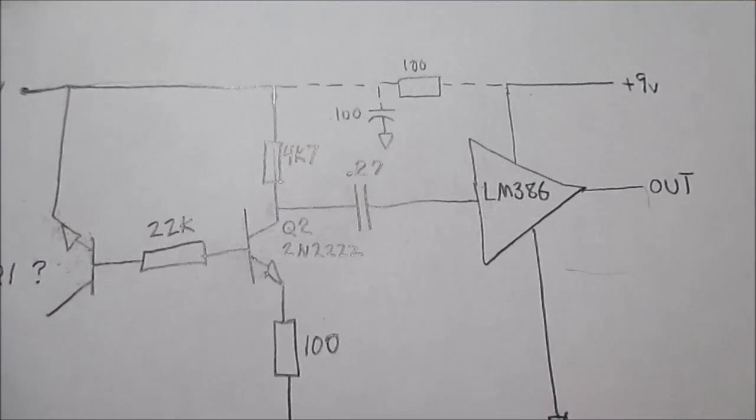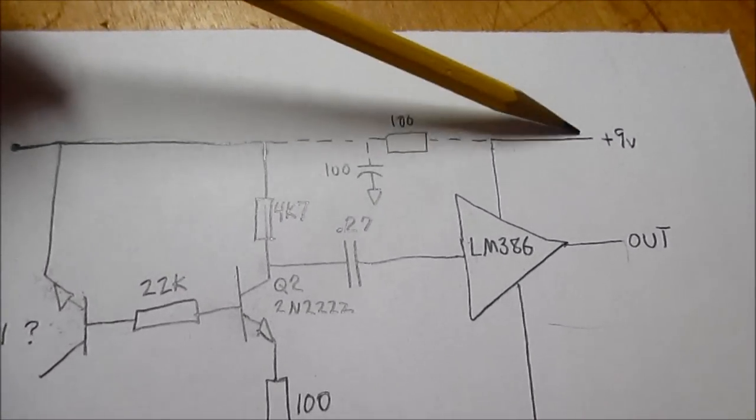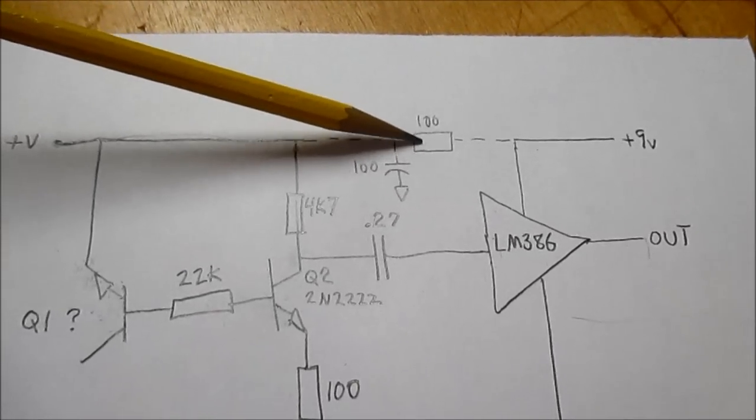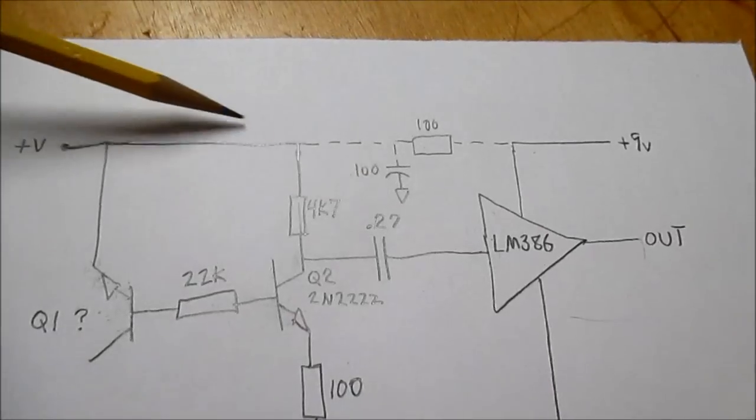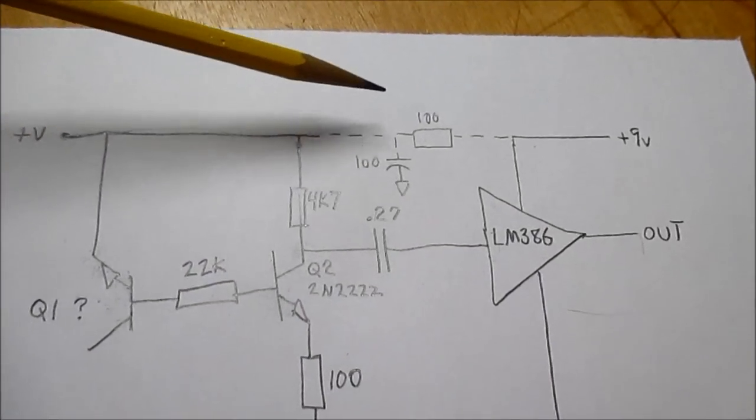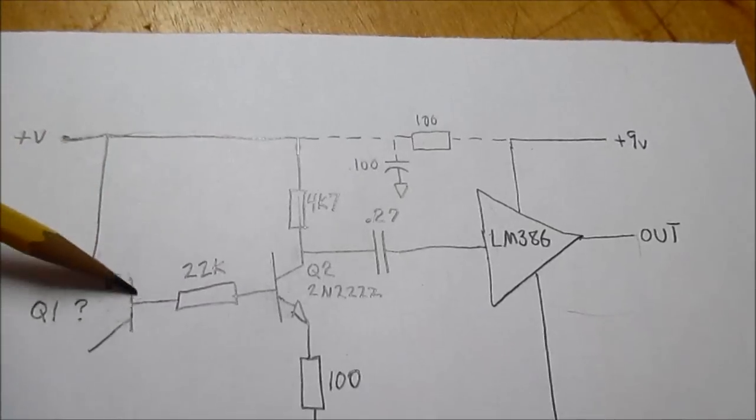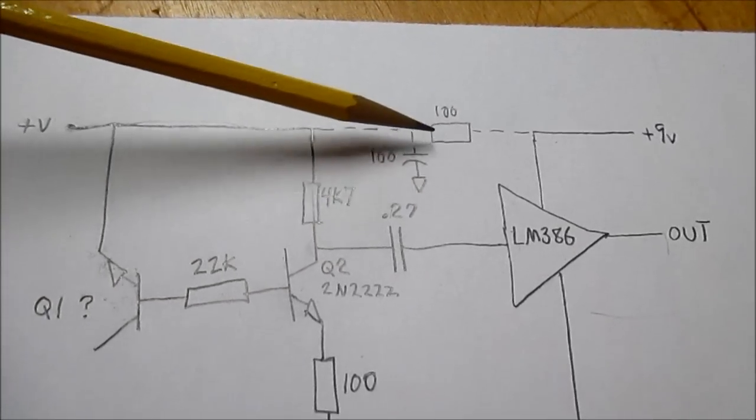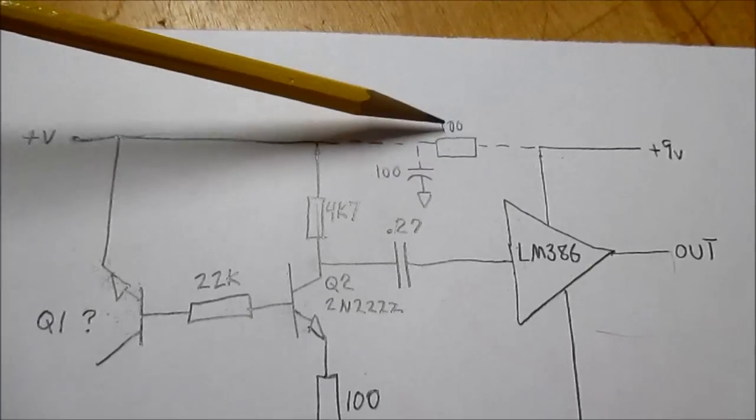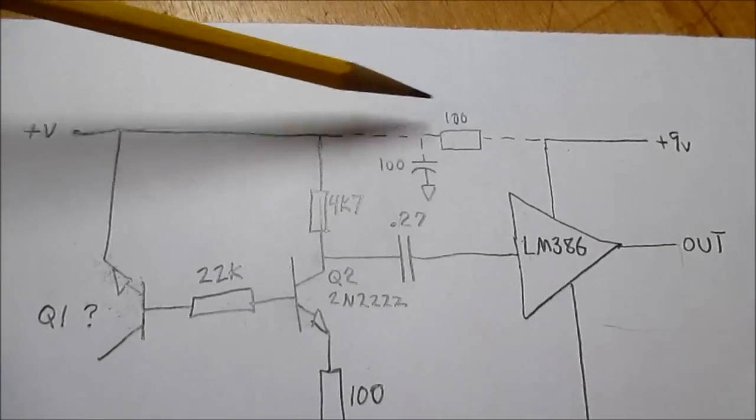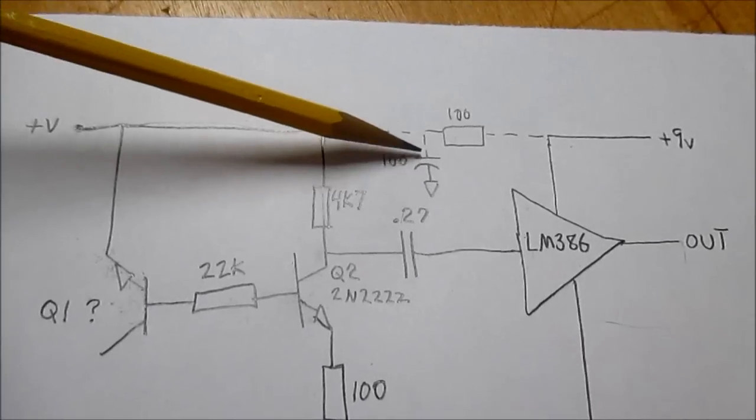And if you want to use one power source, just decouple the stages, the power supply rail here. Separate the noise and preamp from the power amp. And having a 100-ohm resistor and 100 microfarad cap should do the trick.